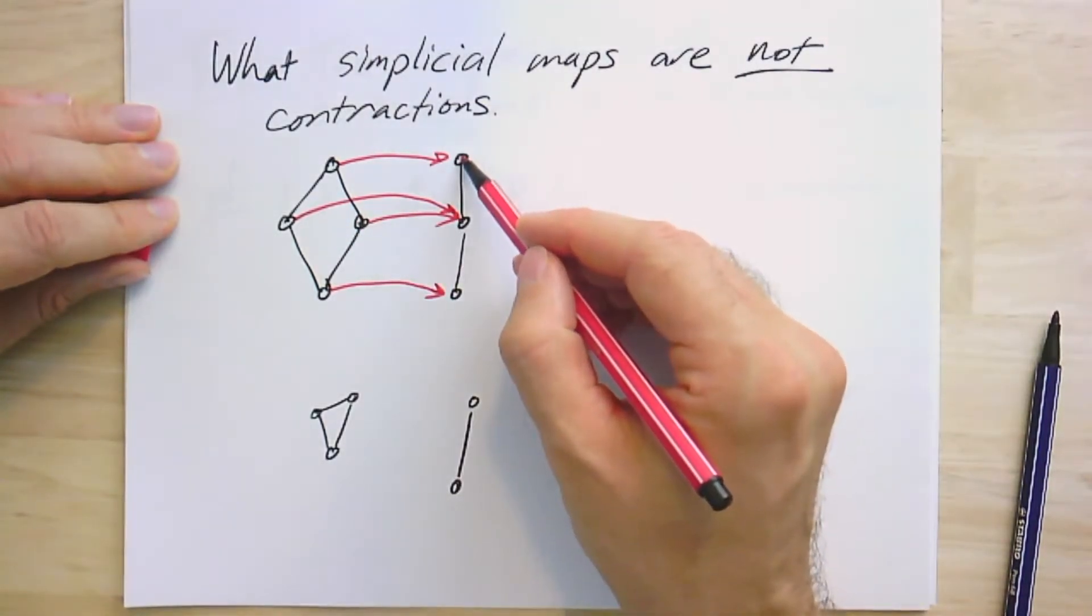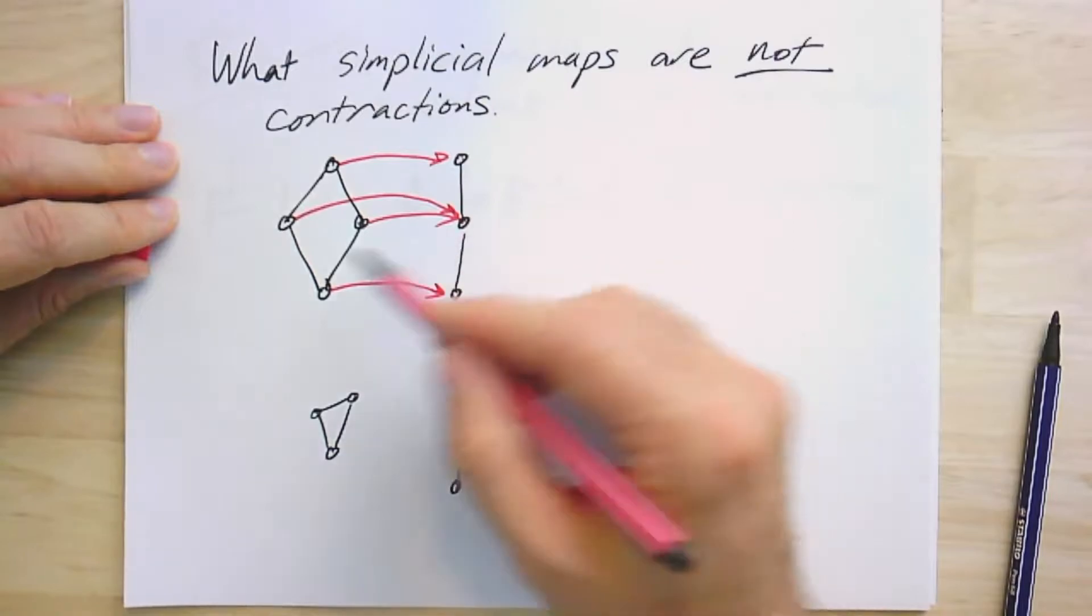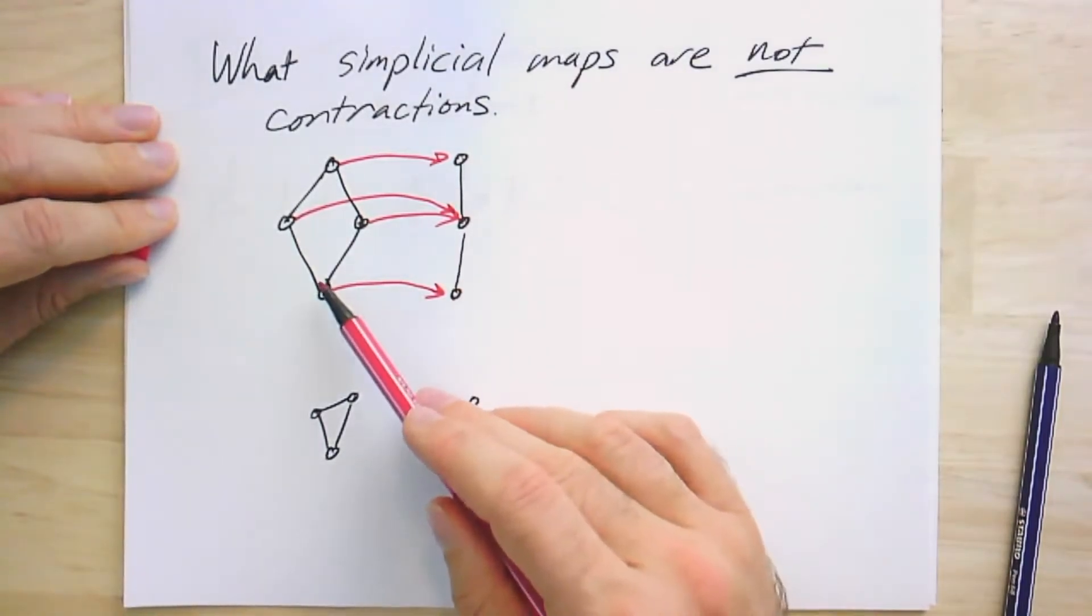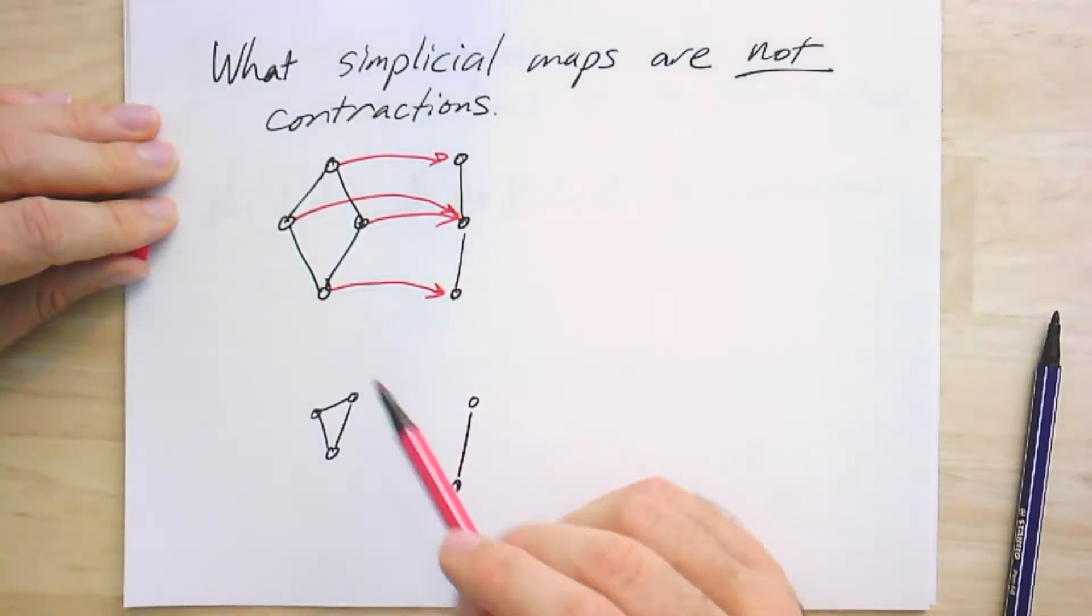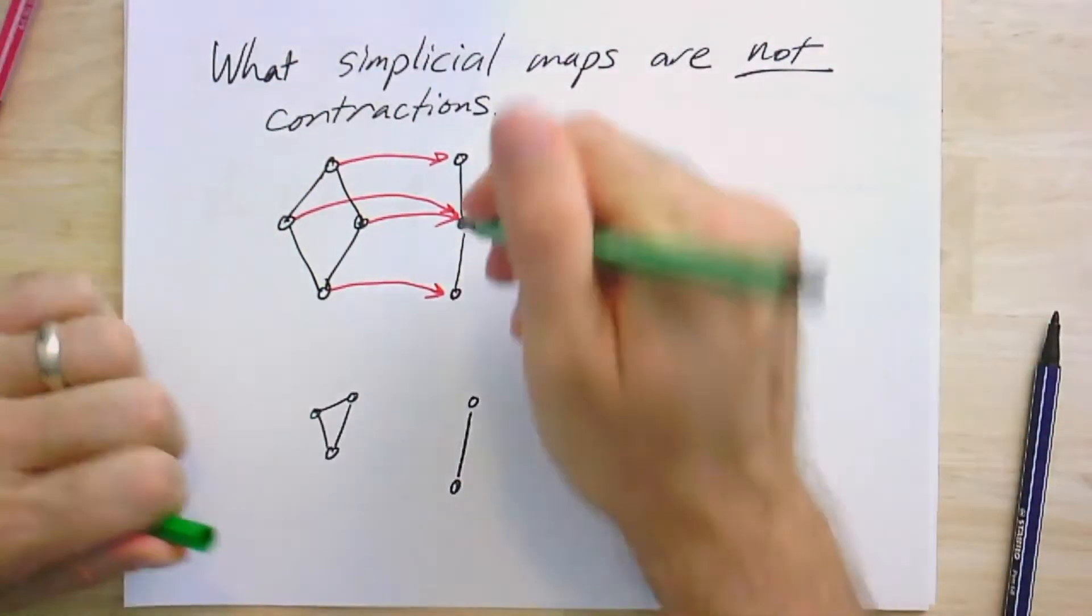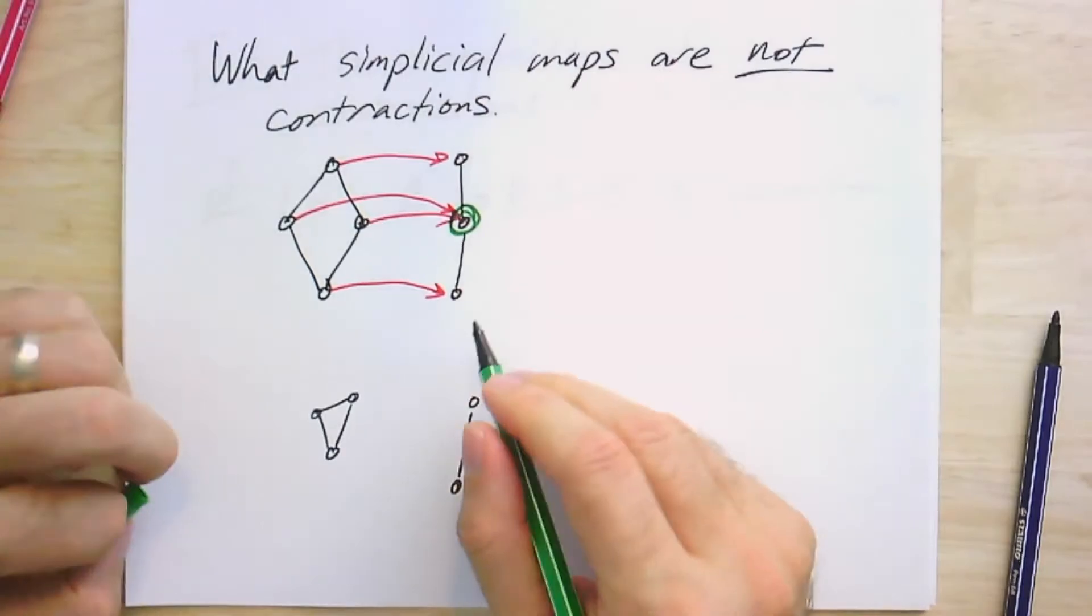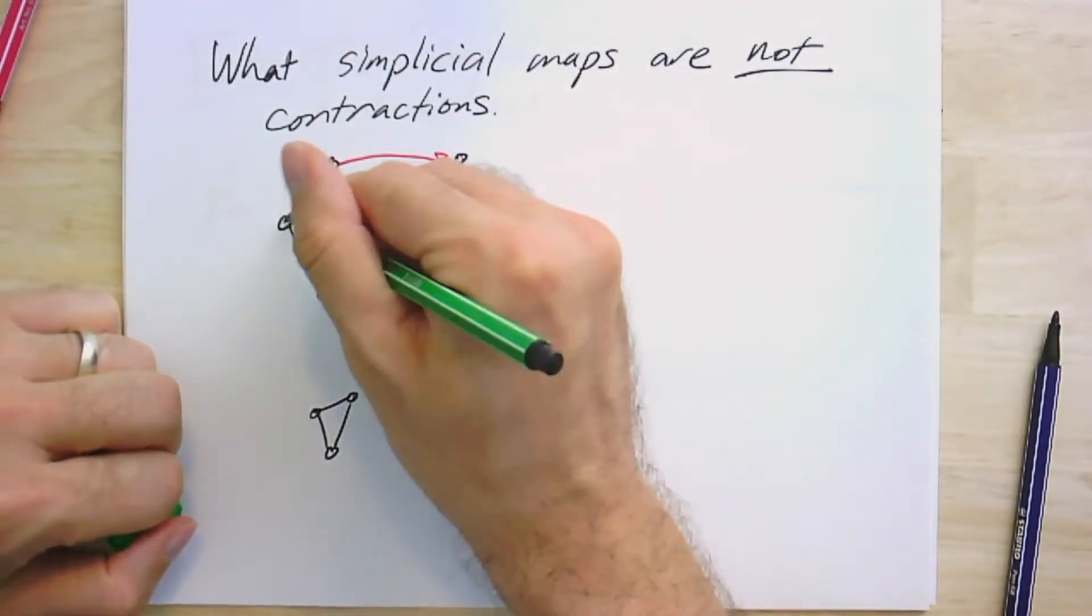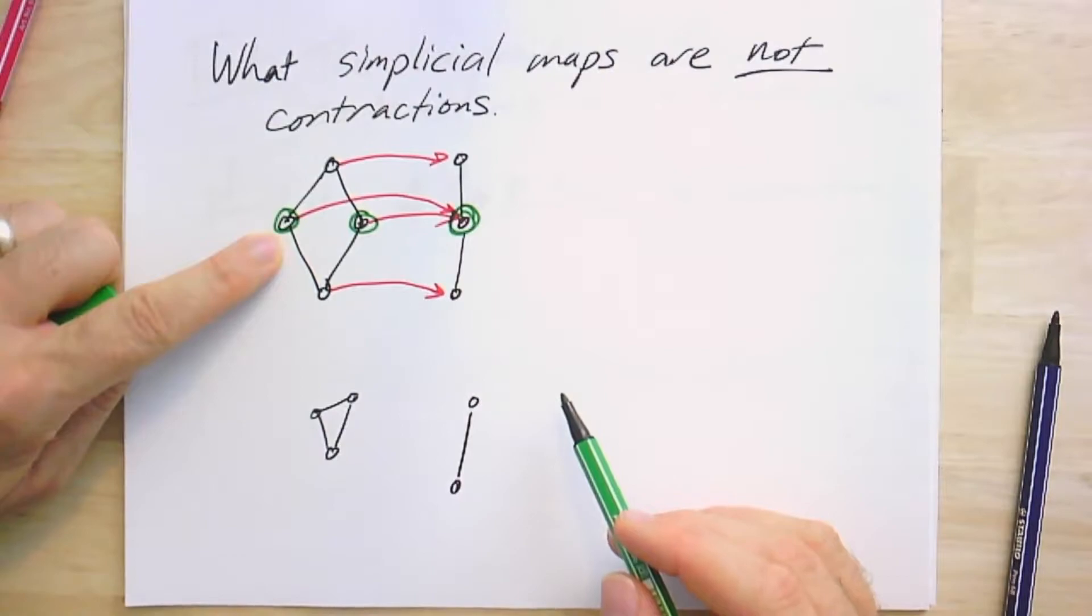It's surjective. Every vertex and edge is the image of something from the domain. However, if I look at, say, this subgraph of just this one vertex, its preimage is this pair of vertices here. So this is two independent vertices.